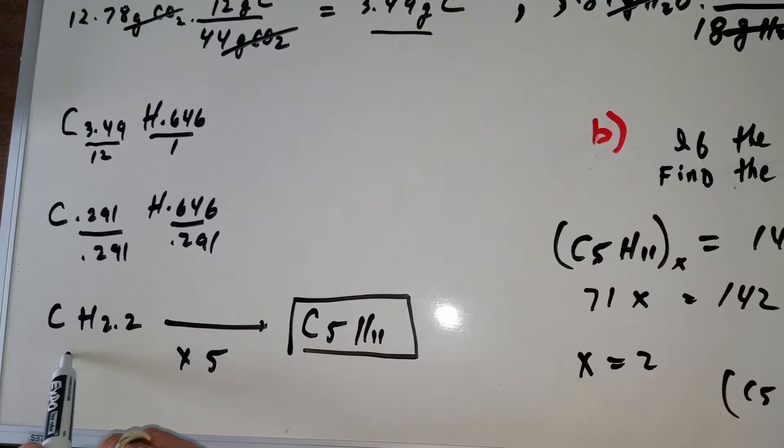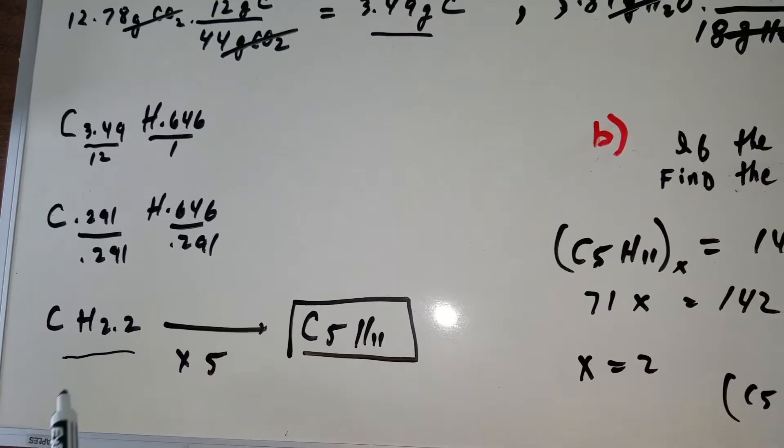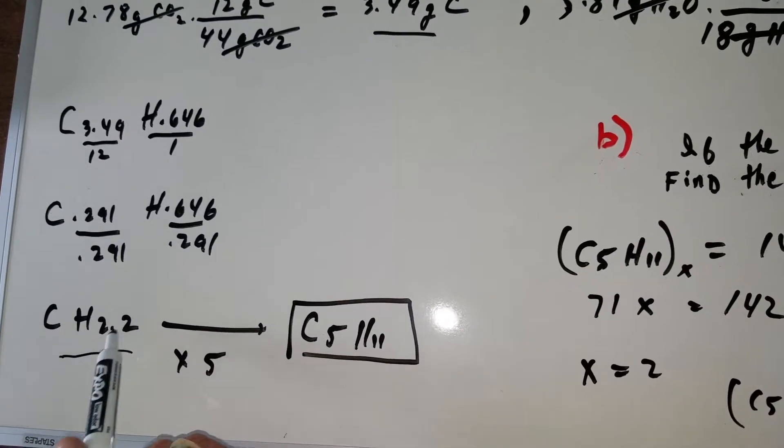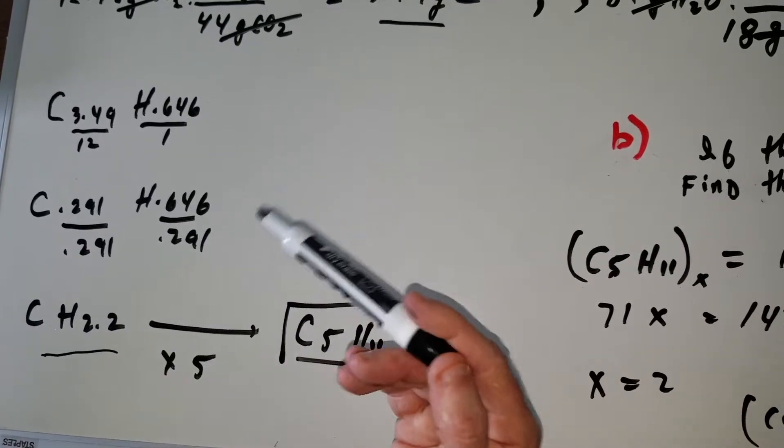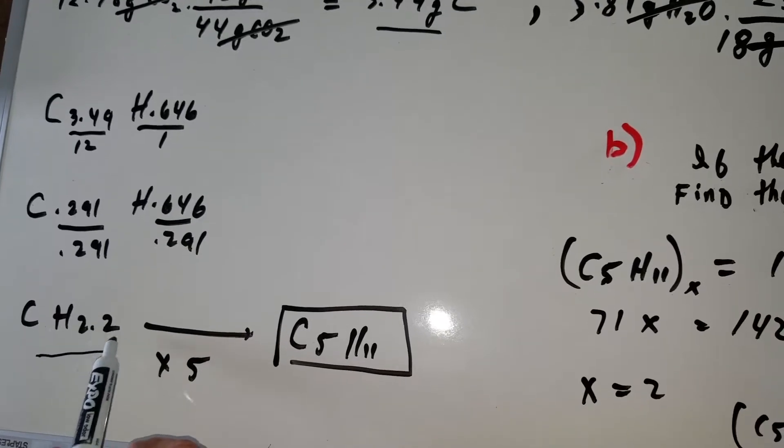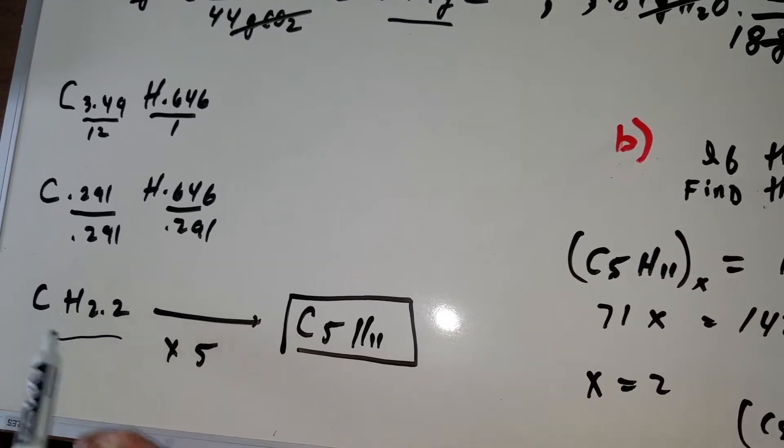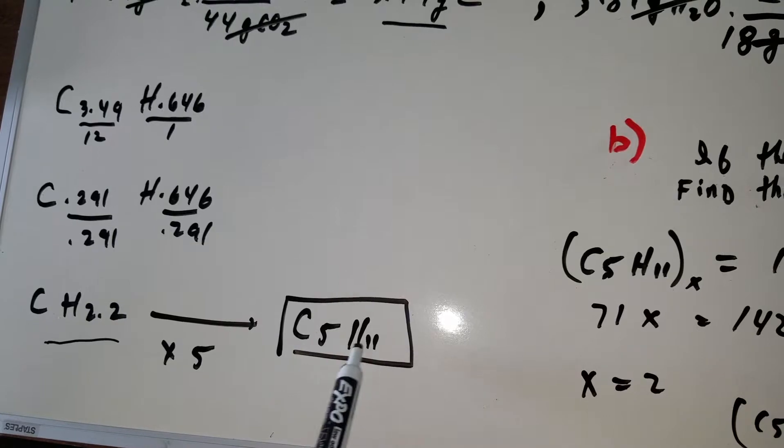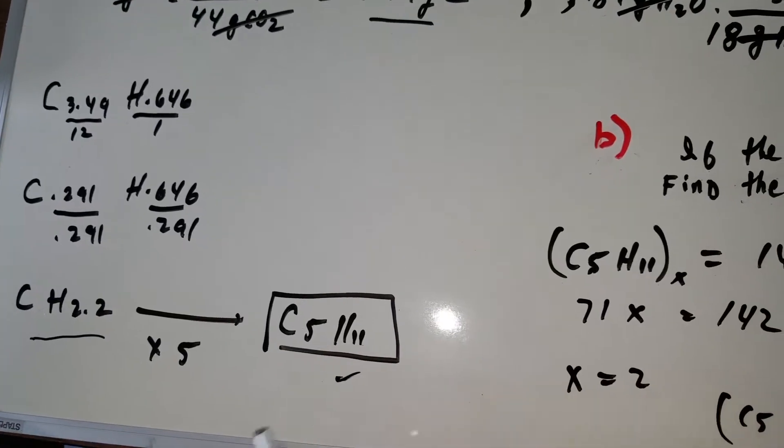Unfortunately, we didn't get a nice ratio. If it ended in 0.5, we would multiply everything by 2 to get to the nearest whole number. But since this is 0.2, I need to multiply it by 5. When I did that, that gives me C5H11 and that's the empirical formula.